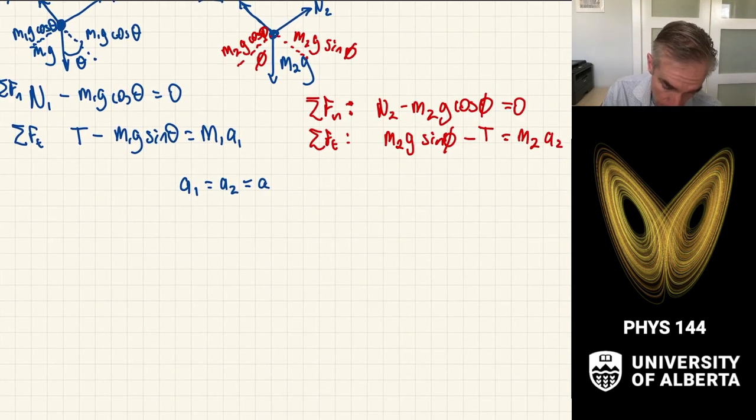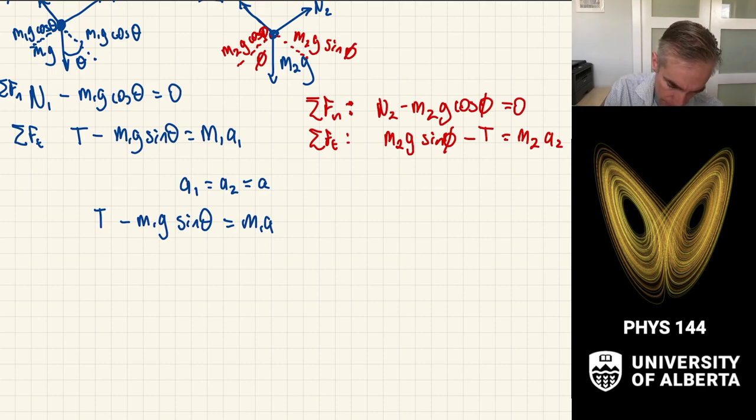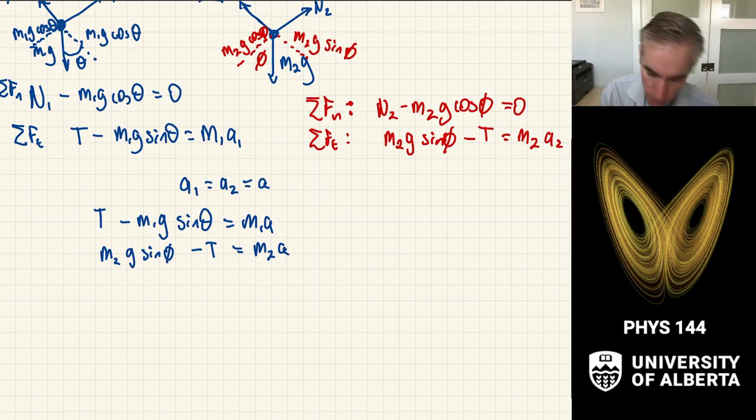So having belabored that, let's go ahead and write down the two systems that we have, which is T minus M1g sin theta is equal to M1A. And then I also have that M2g sin phi minus T is equal to M2A. And this is a system of equation with two unknowns. The thing I don't know are the tension in the rope or the acceleration.